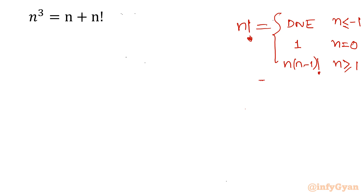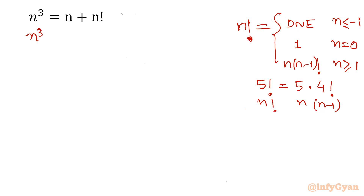For example, 5 factorial can be written as 5 times 4 factorial — that is n times (n-1) factorial. So our equation n cubed equals n plus n factorial can be rewritten as n cubed equal to n plus n times (n-1) factorial.